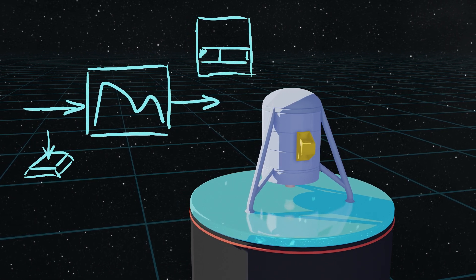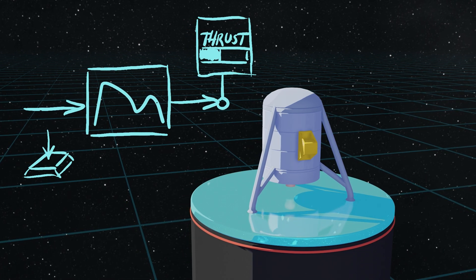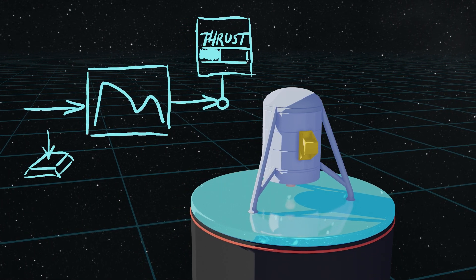Then it plays back a certain graph that you can tweak in game and this graph represents an output value with which you can for example control an engine's thrust. Pretty cool.